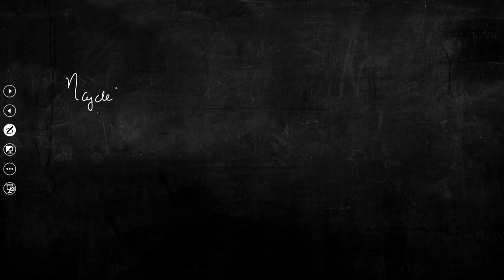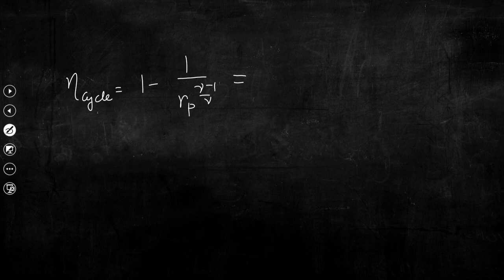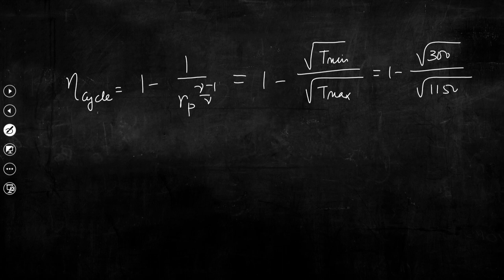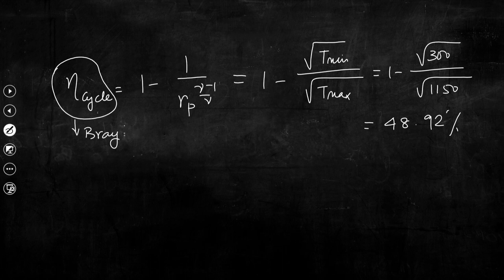Next, we calculate cycle efficiency. We know η_cycle = 1 − 1/(R_p^((γ−1)/γ)). This can also be written in terms of maximum and minimum temperatures at the optimum value of R_p as η_cycle = 1 − √T_min / √T_max. Plugging in values: 1 − √300/√1150 = 48.92%. This is the Brayton cycle efficiency.